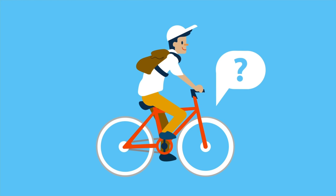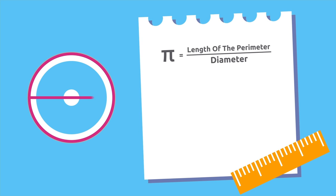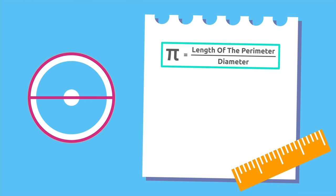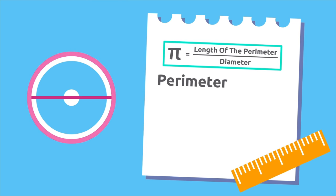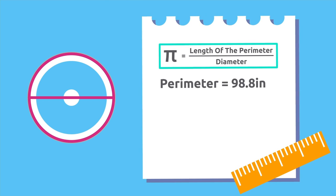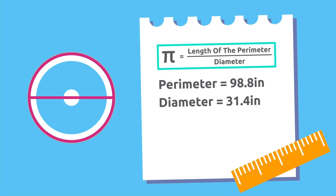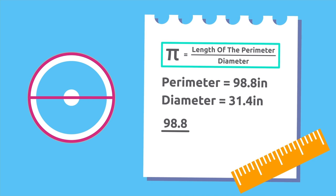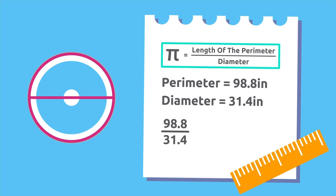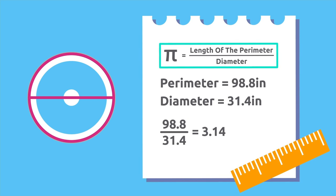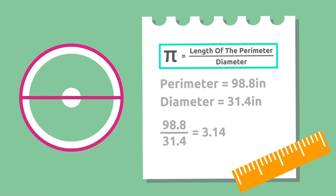For example, the wheel of this bike. Divide the length of the perimeter by its diameter and the result will be 3.14. The perimeter of this wheel is 98.8 inches and its diameter is 31.4 inches. If we divide 98.8 by 31.4 we get 3.14.